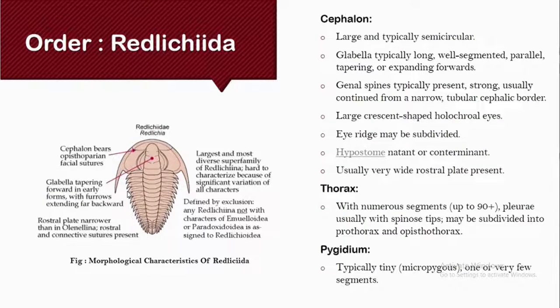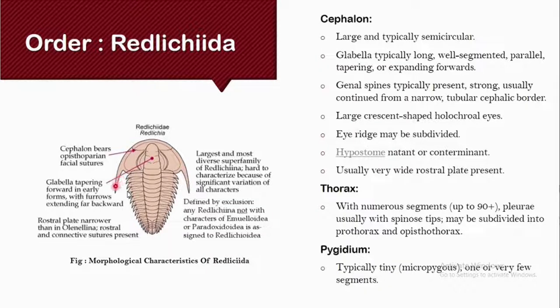The exemplary characteristics of Redlichiida are shown here in a morphological segmental way — in the cephalon, thorax, and pygidium. The first characteristics of the cephalon of Redlichiida is that they are very large and typically semi-circular, arc-shaped.